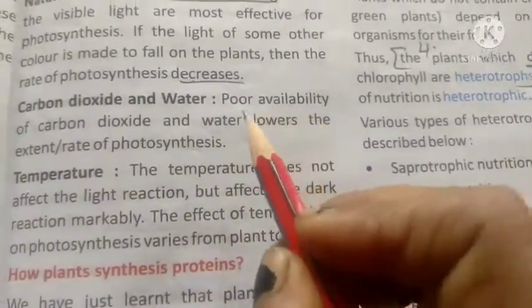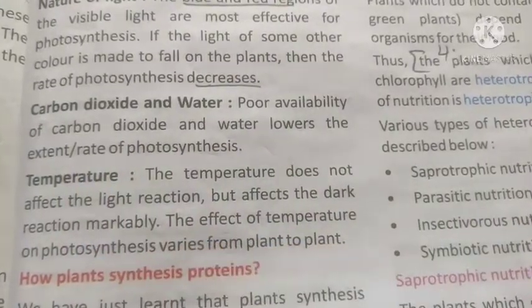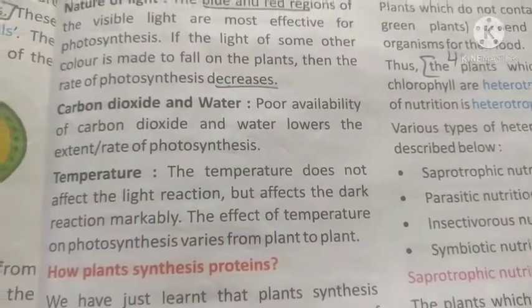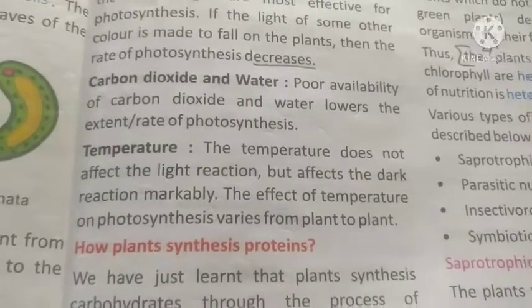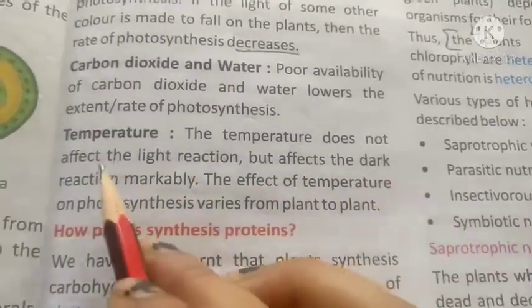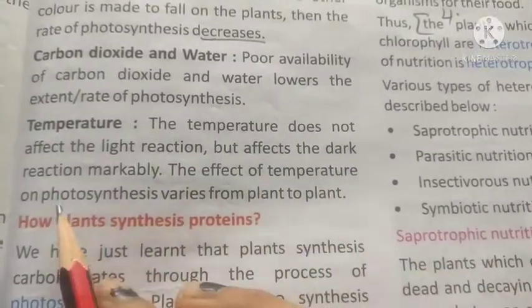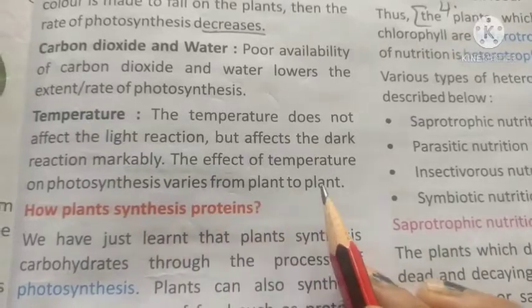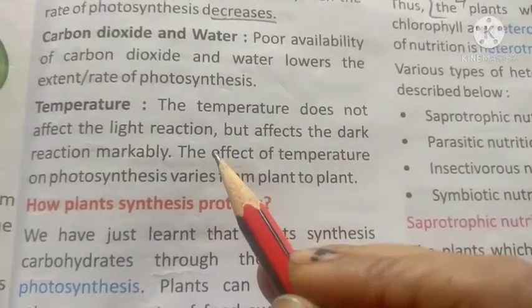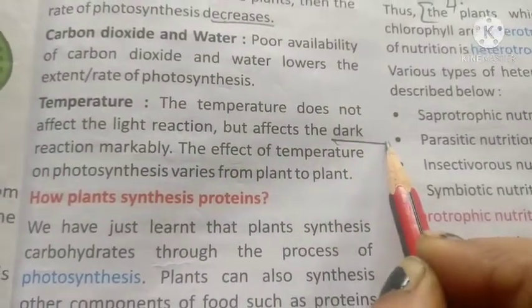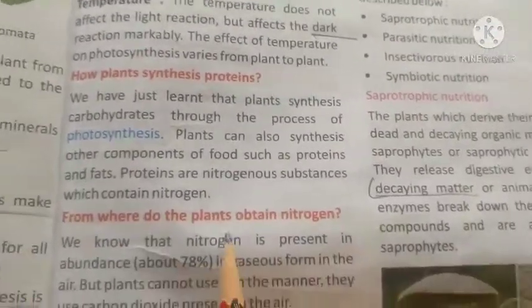Carbon dioxide and water: poor availability of carbon dioxide and water will lower the rate of photosynthesis. Regarding temperature, it does not affect the light reaction markedly, but it does affect the dark reaction. The effect of temperature on photosynthesis varies from plant to plant.